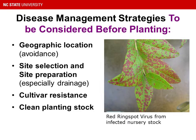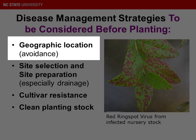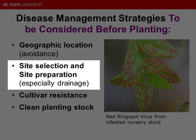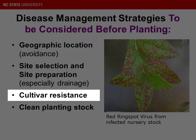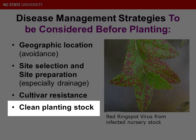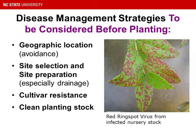Blueberry plants live for a long time, and once they're planted, there are things that you just can't go back and fix. I'd like you to consider the things that are disease management strategies prior to planting. You can avoid some diseases by your location, just being away from other blueberry farms. We've talked a lot in previous sessions about site selection and site preparation. This can avoid a lot of root rot problems and other issues. You have an opportunity to plant cultivars that are resistant to some diseases. And really importantly, you have an opportunity to start with clean planting stock. The risk of bringing in a disease on the plant material is really significant, especially with plant viruses, with plant material from unknown sources.